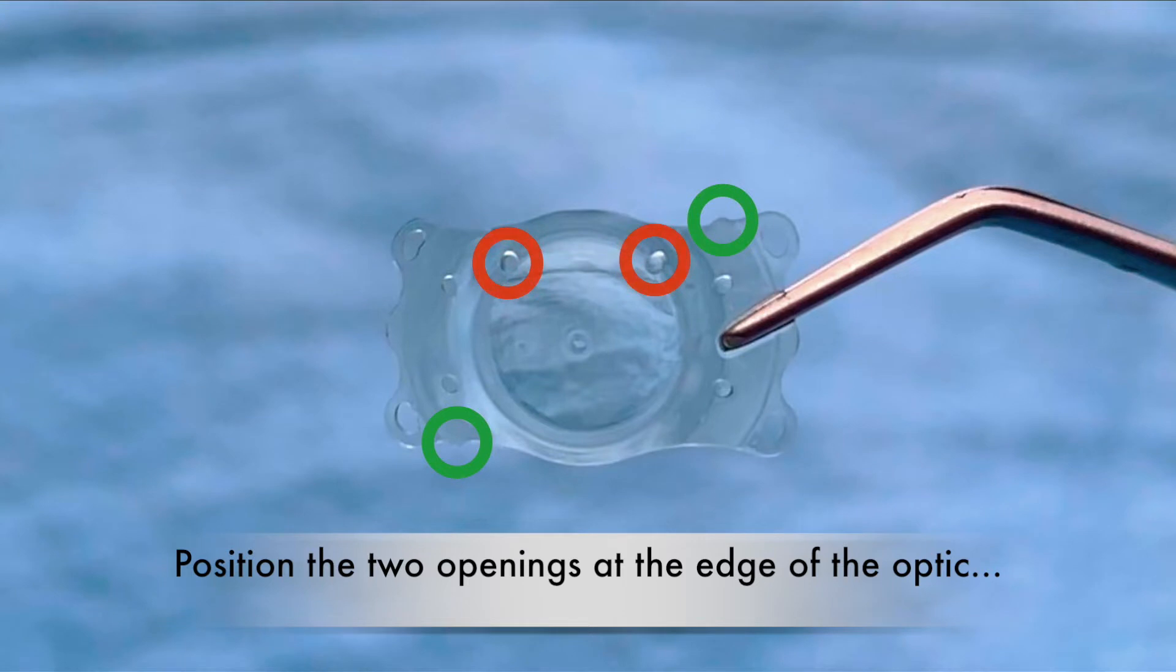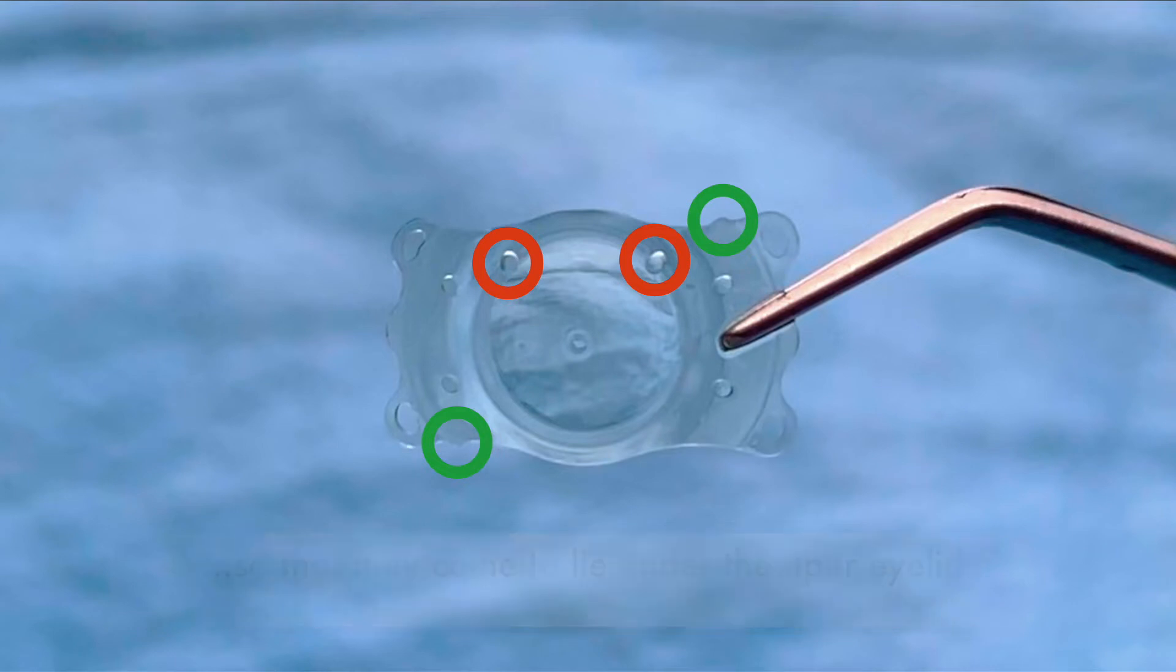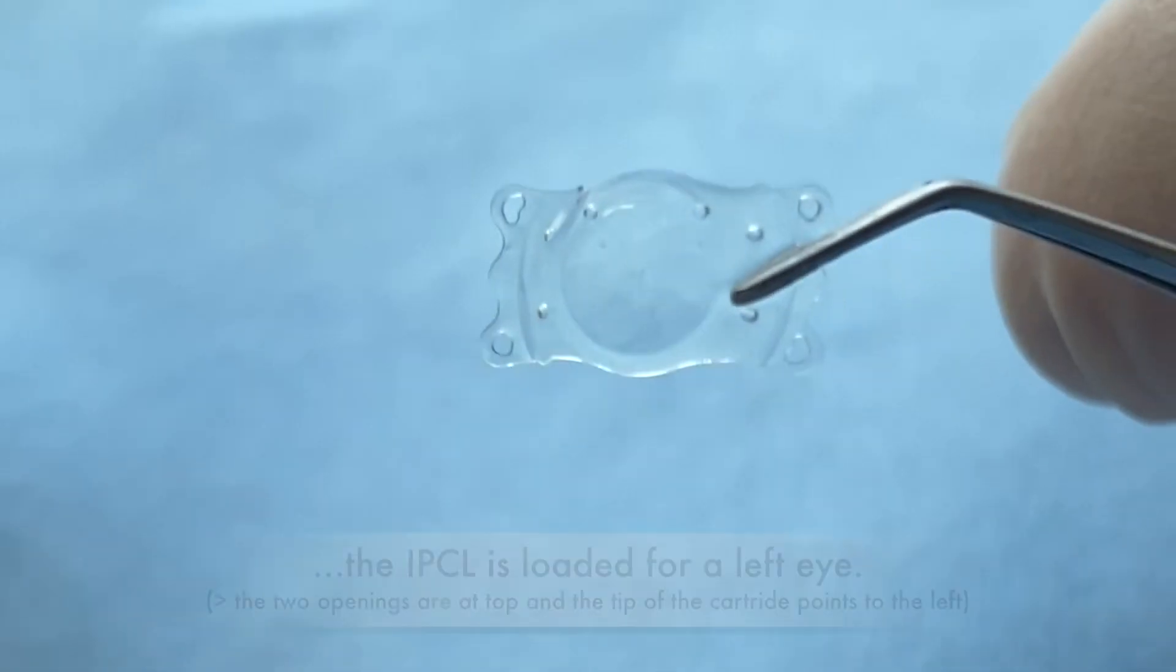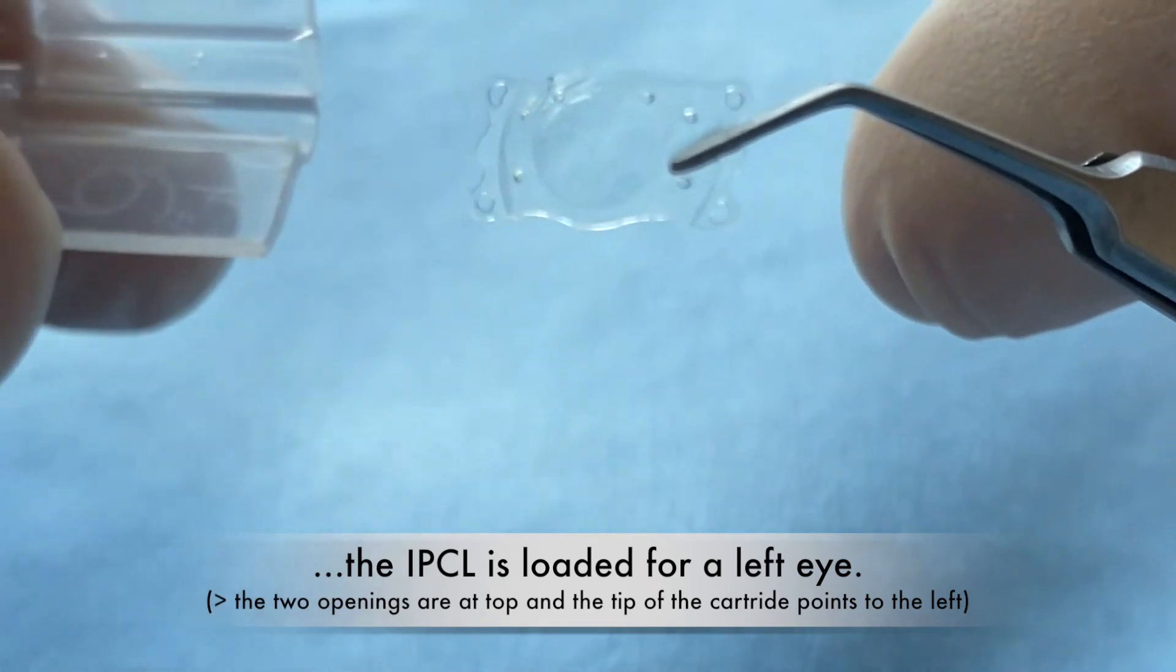Position the two openings at the edge of the optic so that they come to lie under the upper eyelid. In this example, the IPCL is loaded for a left eye.